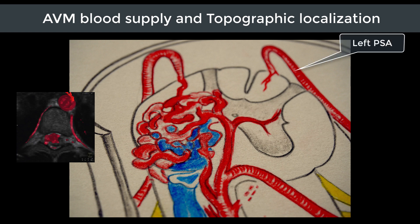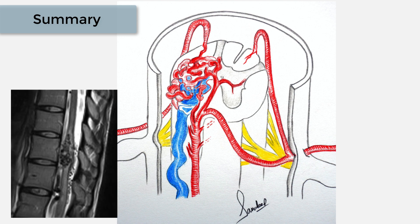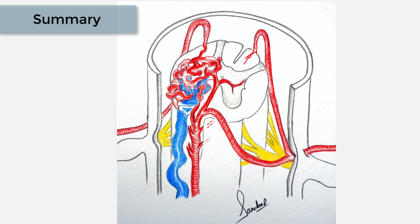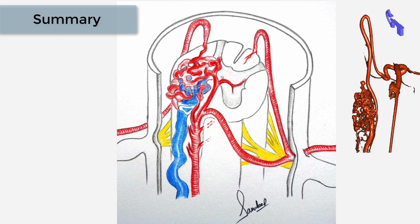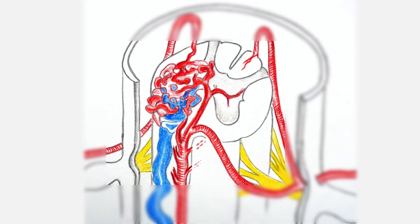In summary, this is a case of spinal cord AVM involving the ventral aspect of the lower thoracic cord at T10 vertebral level, supplied by the anterior spinal artery arising from the artery of Adamkiewicz at T9 vertebral level on the left side, and also supplied by the right posterior spinal artery at the right T9 intercostal level.